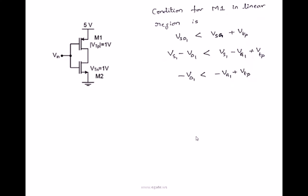Condition for M1 in linear region is VSD1 should be less than VsG1 plus VTP. VSD1 you can write Vs1 minus Vd1, whereas VsG1 can be written Vs1 minus Vg1 plus VTP. And remember that always for PMOS, source will be at more potential than drain voltage.